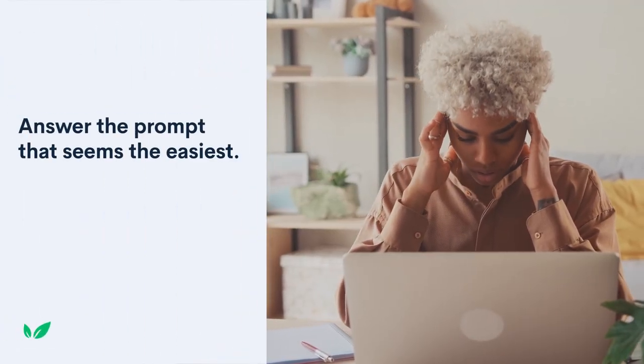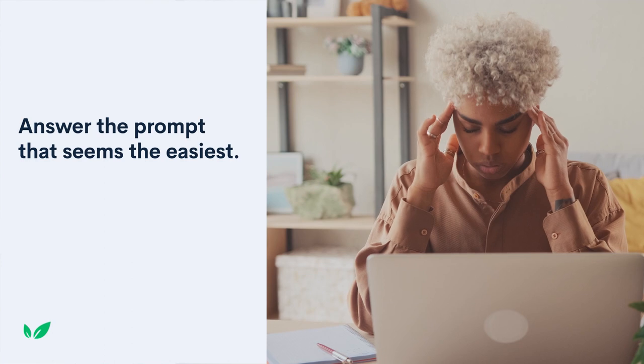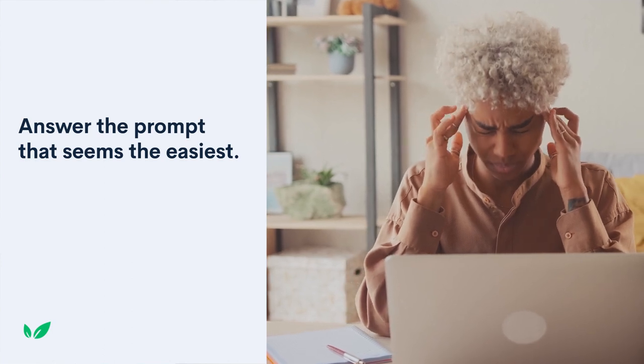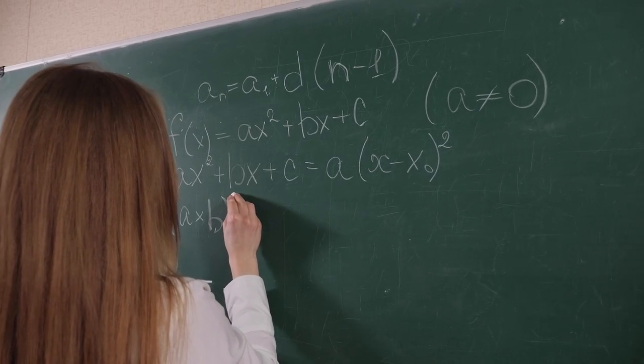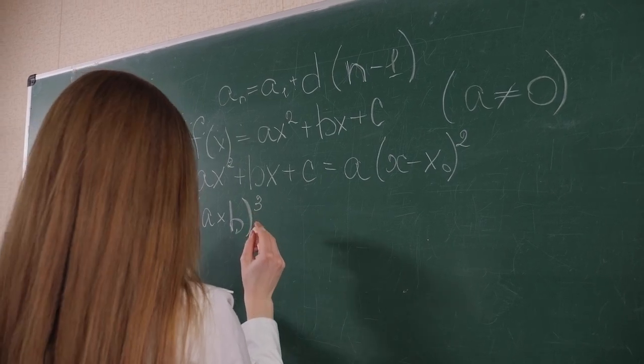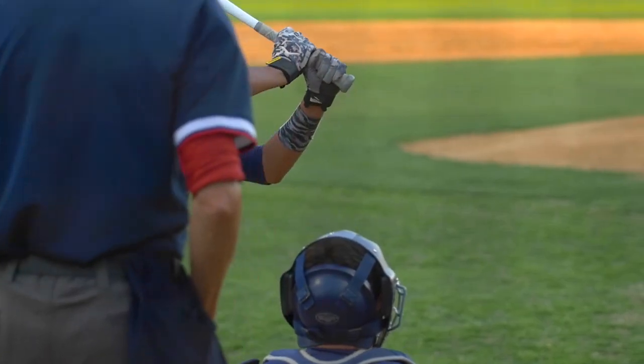Before you think about writing an essay, start by comparing the prompts available for each school. Think about which ones will be easiest to answer, or rather, which prompts best align with your academic and personal experiences. For example, if you have a lot of ideas for your favorite academic subject but are drawing blanks on a meaningful extracurricular experience, then you should write about the one you have the most inspiration for. Once you have an idea of what prompts you'll be writing, you can start your response by brainstorming.